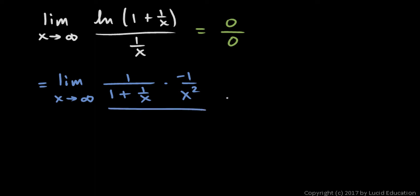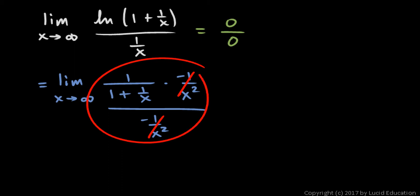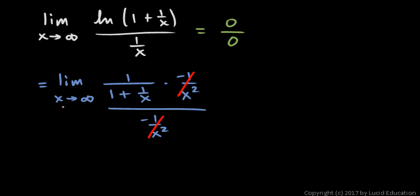All this is over the derivative of the denominator. The derivative of 1 over x is also negative 1 over x squared. This looks like a great big complex fraction, but it simplifies really, really fast. The negative 1 over x squared in the numerator and denominator cancel out. And as x approaches infinity, 1 over x goes to 0. So this limit can be evaluated with simple substitution — we put in infinity for x, and we're just left with 1 over 1, which is 1.